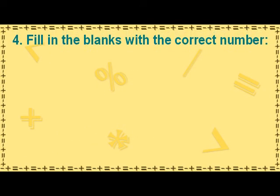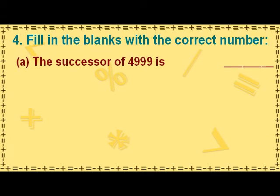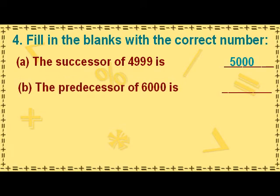Fill in the blanks with the correct number. We get the successor of a number by adding 1 to that number. So when we add 1 to 4999, we get its successor as 5000. We get the predecessor of a number by subtracting 1 from that number. So when we subtract 1 from 6000, we get its predecessor as 5999.